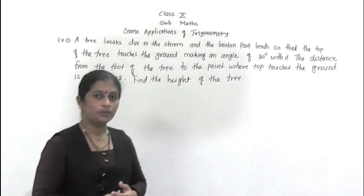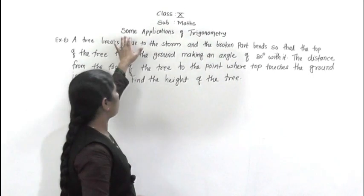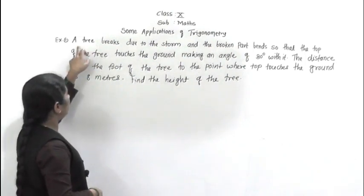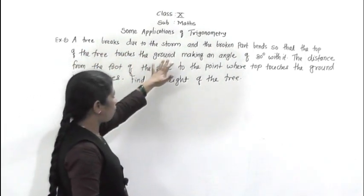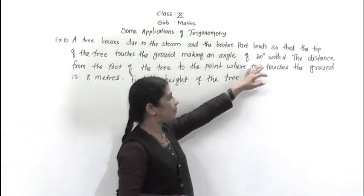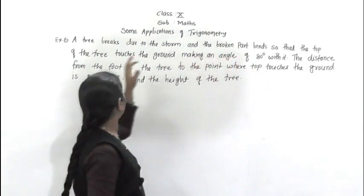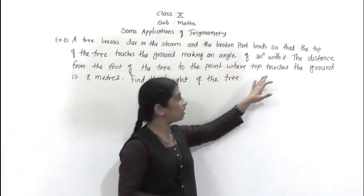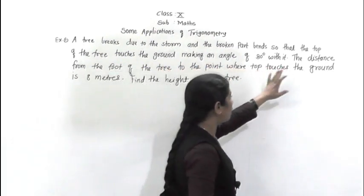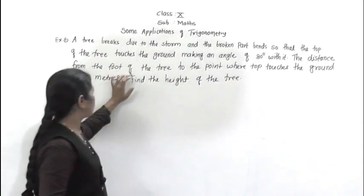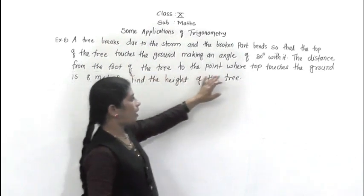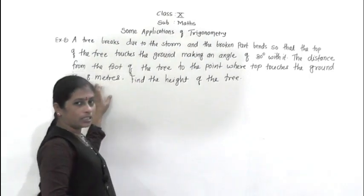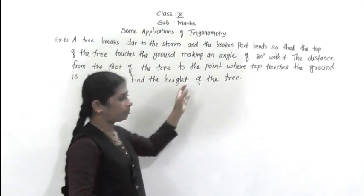Good morning students. Today we are going to see more examples on applications of trigonometry. First problem: a tree breaks due to the storm and the broken part bends so that the top of the tree touches the ground making an angle of 30 degrees with it. The distance from the foot of the tree to the point where the top touches the ground is 8 meters. Find the height of the tree.